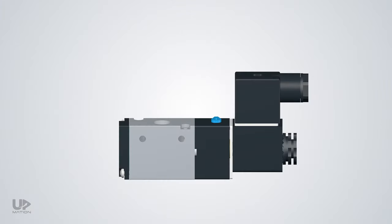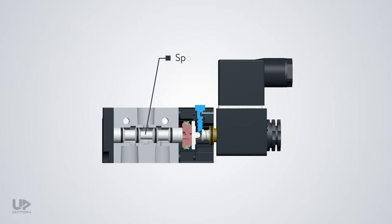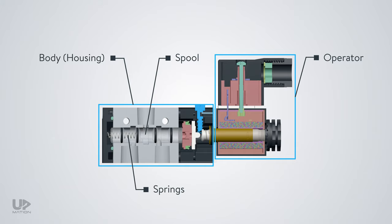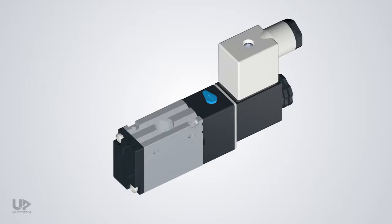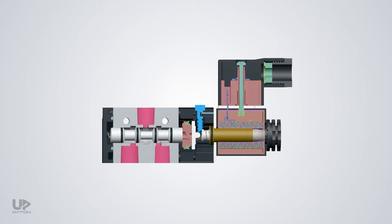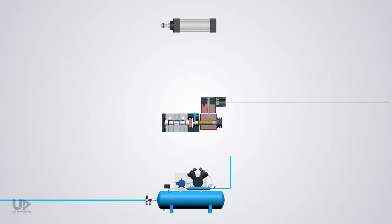The general components of a spool valve are like this. A spool, which is a cylindrical component. Operator, which we have talked about extensively in the previous video, and there might be more than one operator. Body or housing. And maybe springs on one or both ends. The spool moves within the bore of the housing. Some holes are machined on the body of the housing to open the fluid passages into or from the valve. These holes are known as ports and are connected to the other hydraulic or pneumatic circuit components.